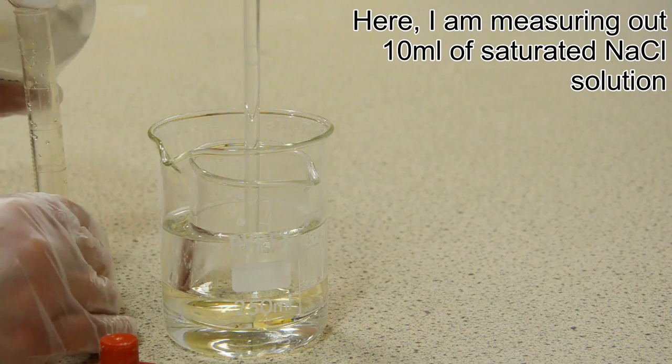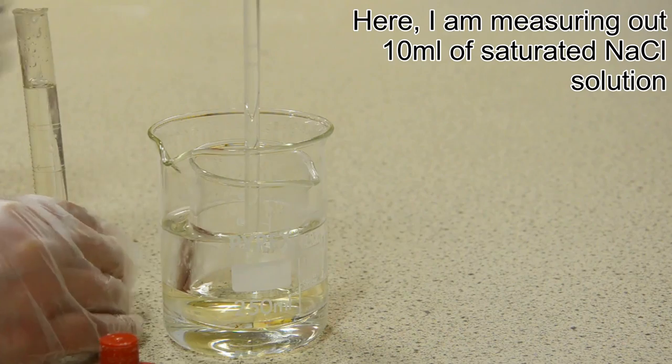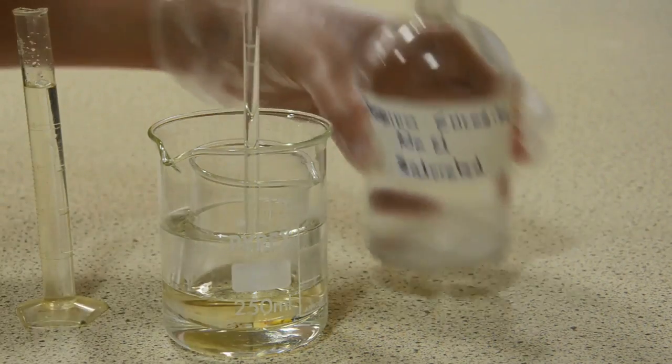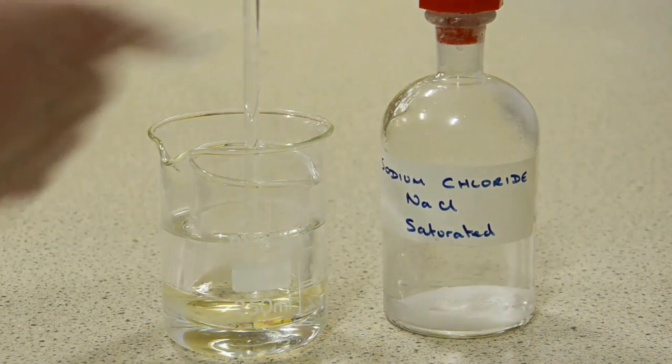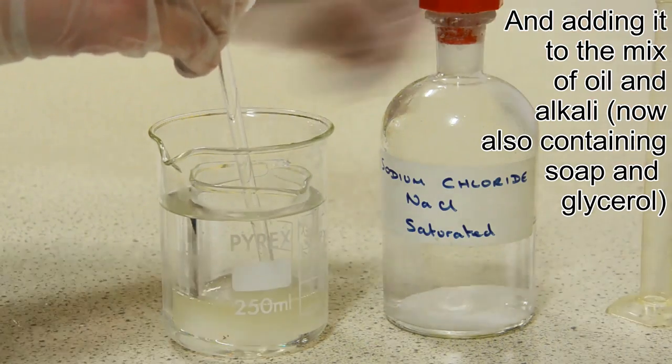I'm going to measure out 10 centimeters cubed, 10 milliliters of it, and then I'm going to add it to our soap suspension in the 100 milliliter beaker, and again I'm going to stir.